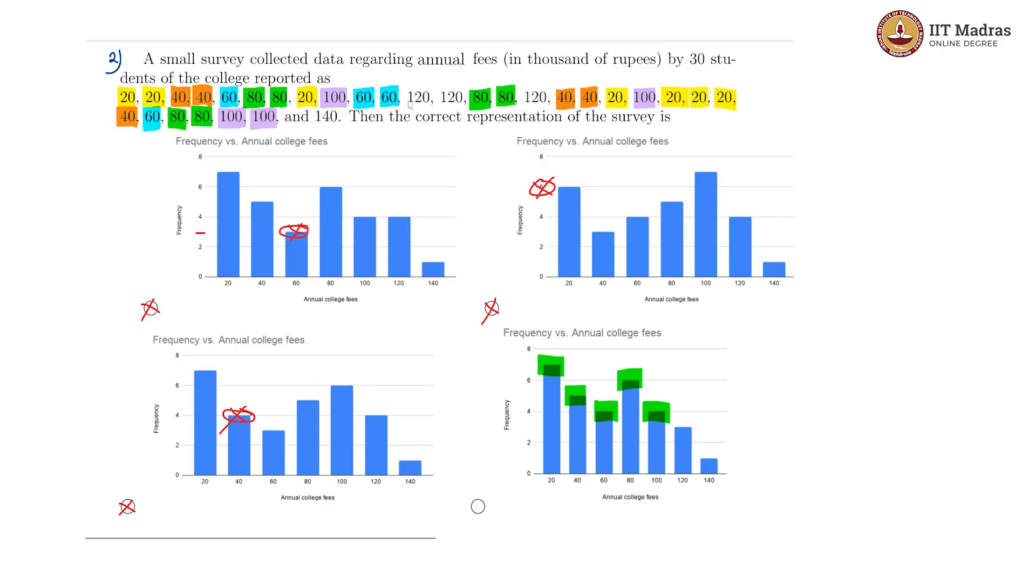And then let us look at 120. 120, there is 1, 2, 3. 120s, which is also given correct. And lastly, there is only 140, which is also represented correctly. So our correct option is D.